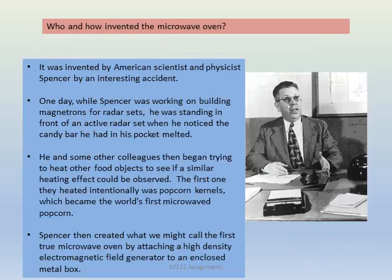Who invented the microwave oven, and how? It was invented by American scientist and physicist Spencer, but it was done by accident. While he was working on building a magnetron for radar sets, he was standing in front of an active radar set when he noticed that a candy bar had melted in his pocket. He got the idea that microwaves could be used for heating food. He and his colleagues then intentionally heated popcorn kernels, which became the world's first microwave popcorn. Spencer then created the first true microwave oven by attaching a high density electromagnetic field generator to an enclosed metal box.